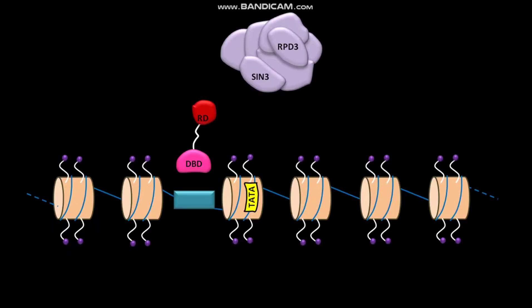Let us discuss repressor-directed histone deacetylation. Here the histone N-terminal tails are present in their acetylated form.